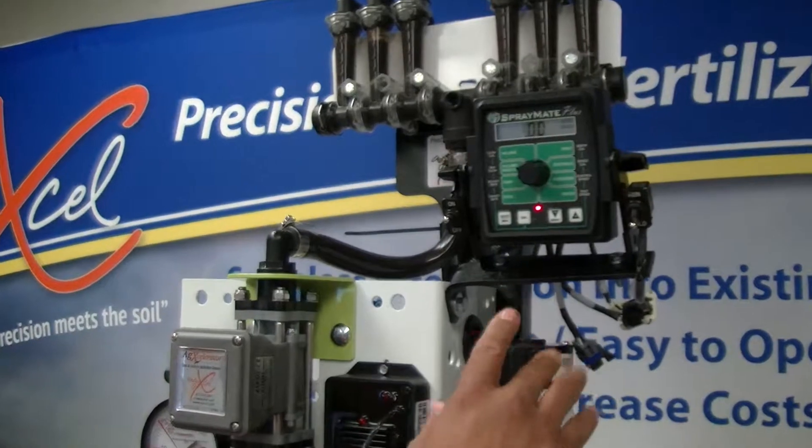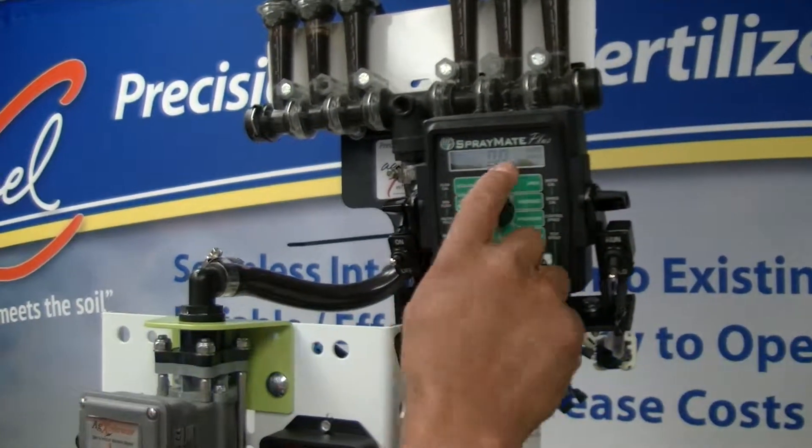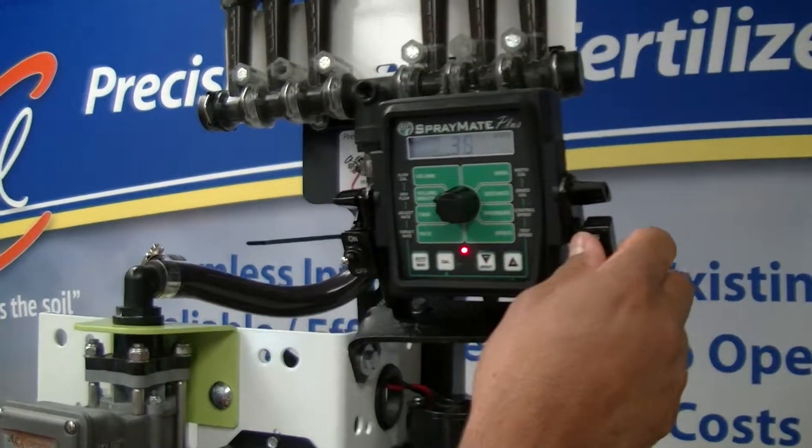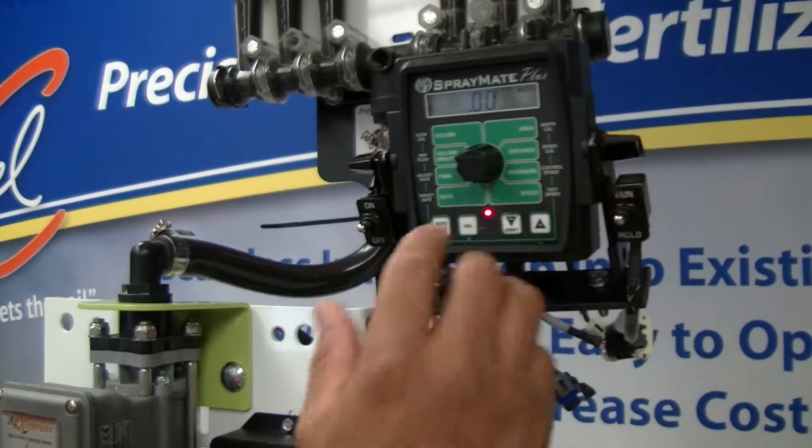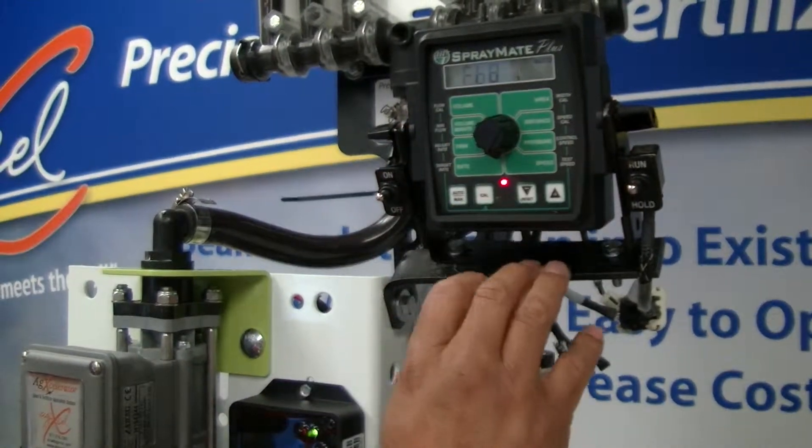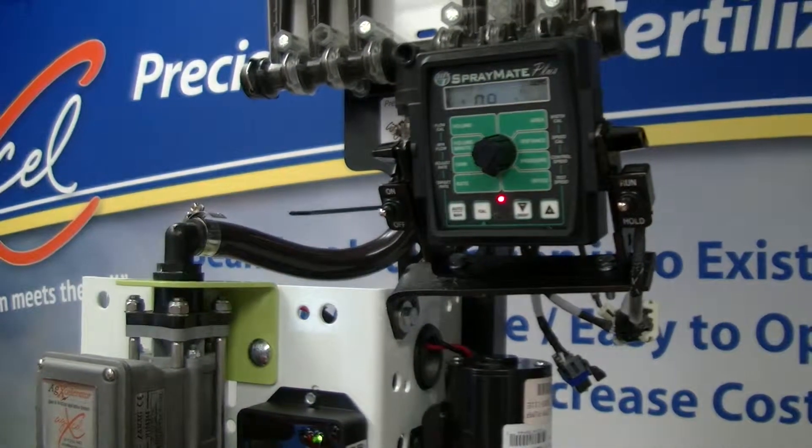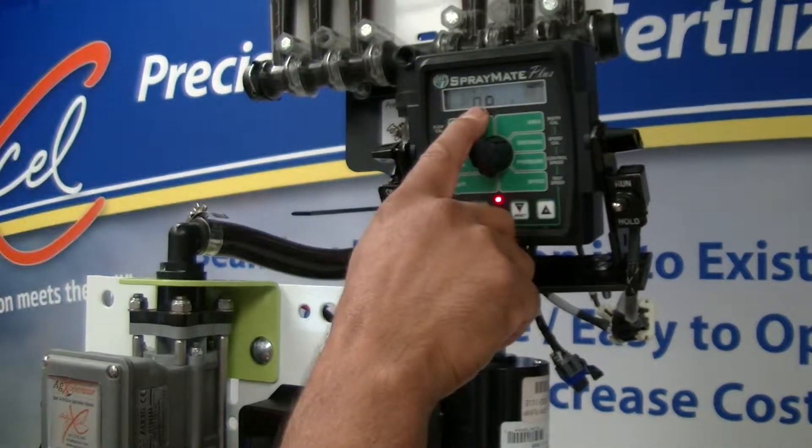One of the first things you want to test when you're possibly having a flow meter issue is if you notice on the screen here, when I run it, my system's running, but if I turn this to the target rate, it's going to say no flow. Yet we know the system's running. We got liquid coming out, but this says no flow.